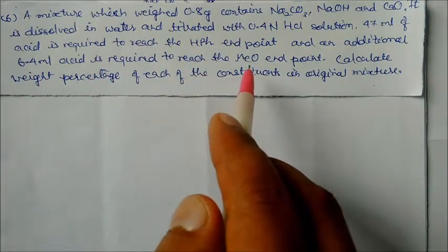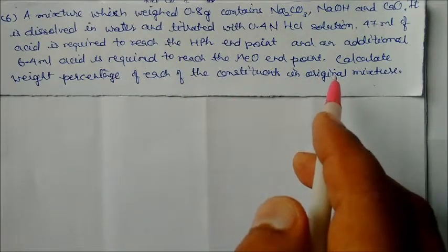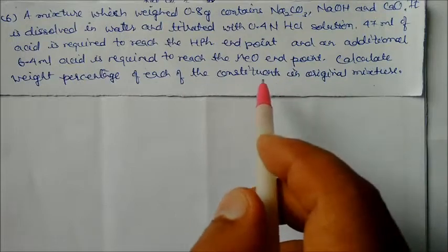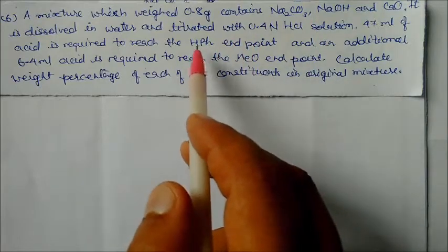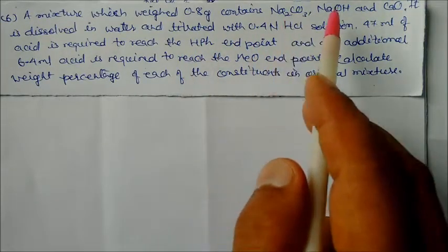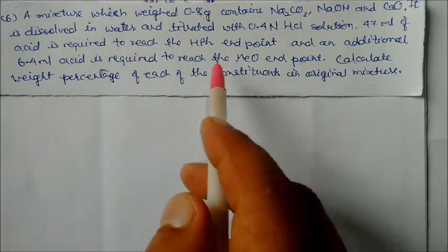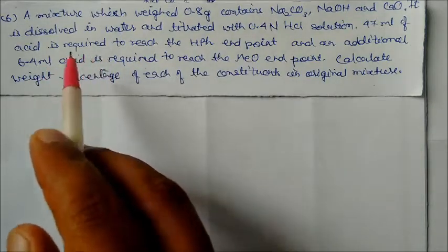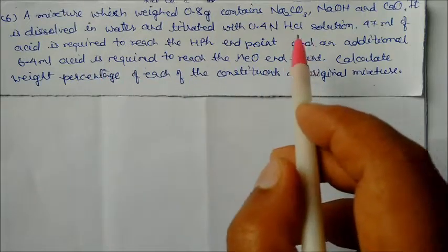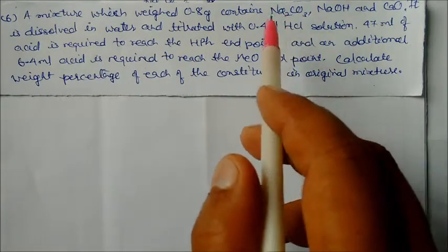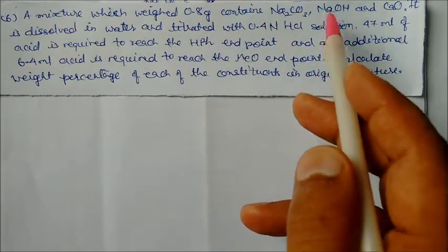An additional 6.4 ml of acid is required to reach the methyl orange end point. Calculate the weight percentage of each constituent. In the original mixture, first it reacts with phenolphthalein, where sodium carbonate is half-neutralized. After that, it reacts with methyl orange for full neutralization. We start by finding sodium carbonate from the back side, since sodium bicarbonate is half-neutralized.